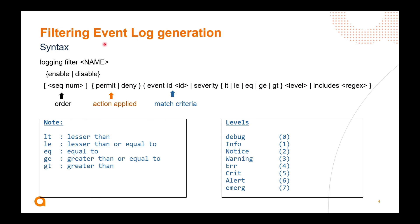This is our syntax if we wanted to apply a filter to the logging event buffer or event log: we'd say 'logging filter' and give it a name. We use the keyword 'enable', and this will then apply the filter directly to the event log. Without this keyword 'enable' applied, it does not get applied to the event log. If we just wanted to apply this to a syslog, we wouldn't need this particular 'enable' keyword.